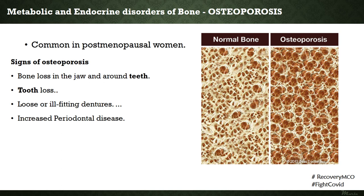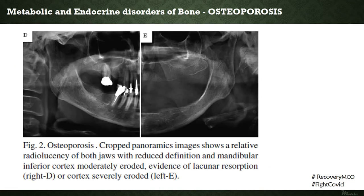In the oral cavity, osteoporosis may lead to bone loss in the jaw and around the tooth, resulting in loosening and loss of teeth. Gradual resorption of the alveolar ridge may cause loosening or ill-fitting dentures. There may also be an increased prevalence of periodontal diseases. OPGs from patients with osteoporosis generally reveal decreased bone height due to accelerated resorption and decreased mineral density, appreciated by the level of radio-opacity seen within the radiographs.